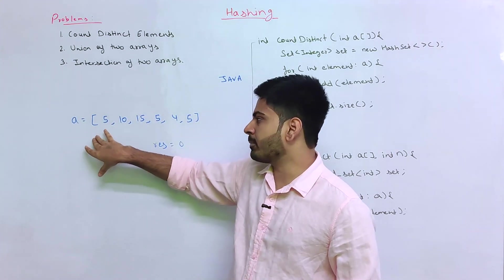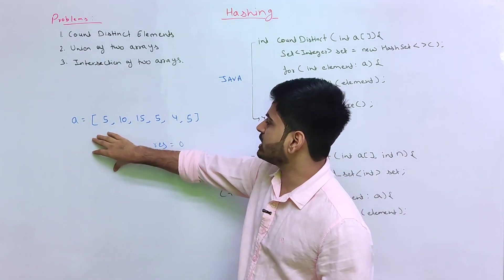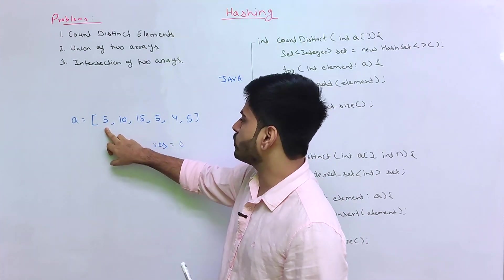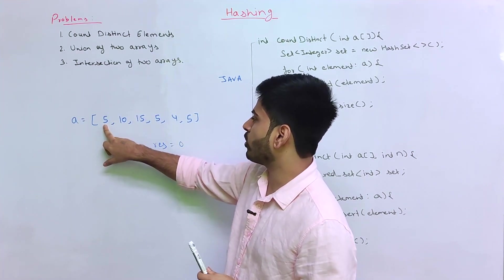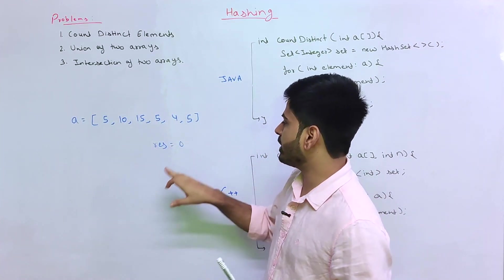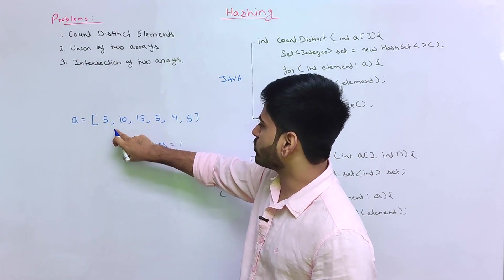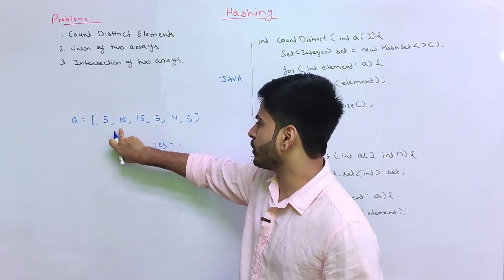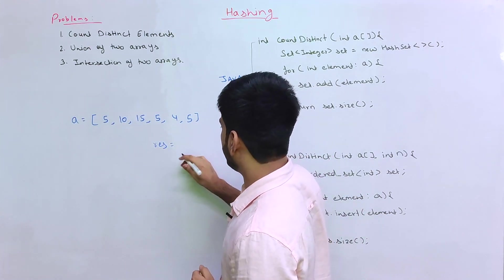If you want to count the first element, then you can count the duplicate elements. You can go to the first element in an outer loop, and then you can go into an inner loop. The inner loop will check each element against the first element, and you can increment the result counter accordingly. Then you move on to the next element in the outer loop.